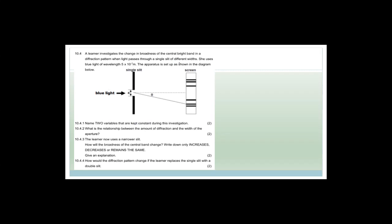Name two variables kept constant during this investigation. The first would be the wavelength of the light. The second is the distance of the screen from the boundary — she's keeping that constant. Now, what is the relationship between the amount of diffraction and the width of the aperture? That is inversely proportional.